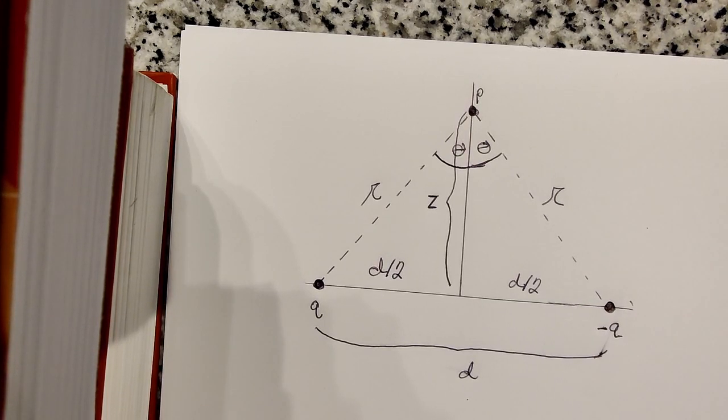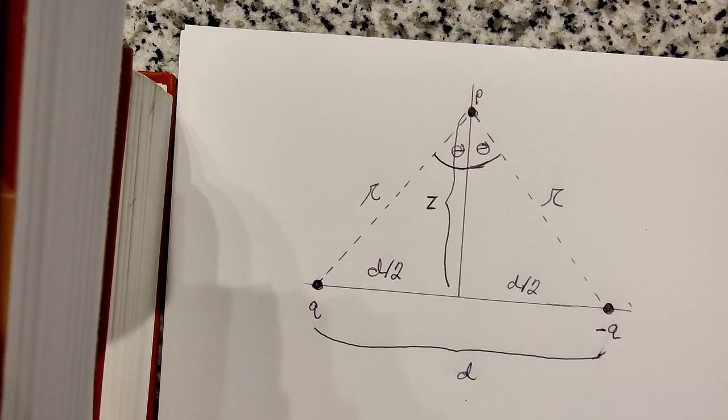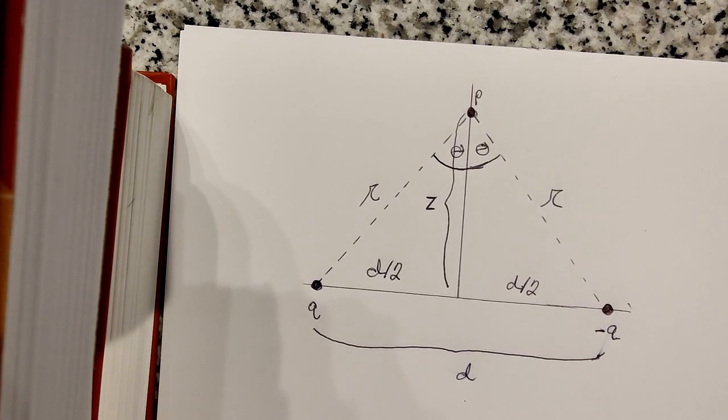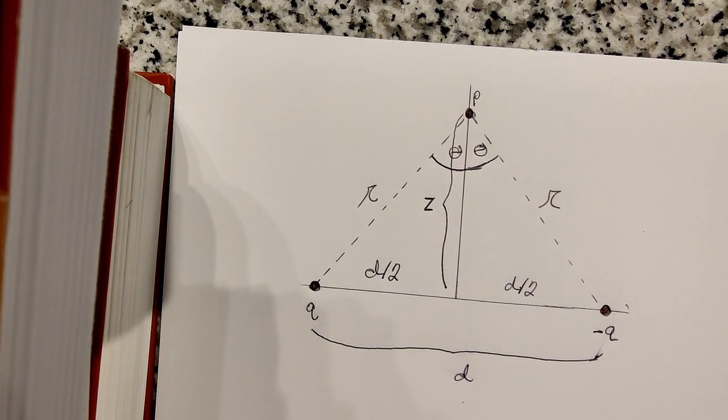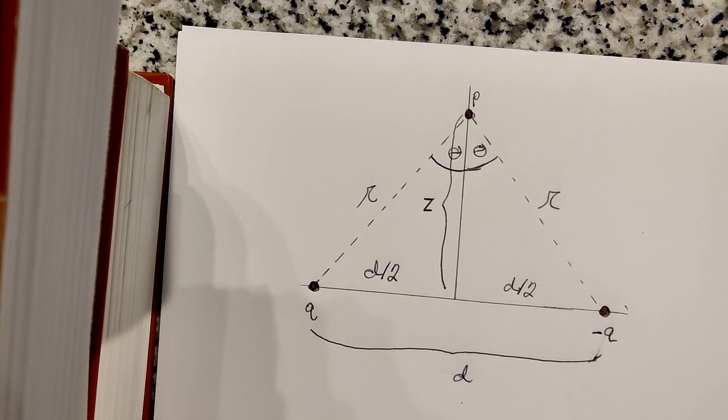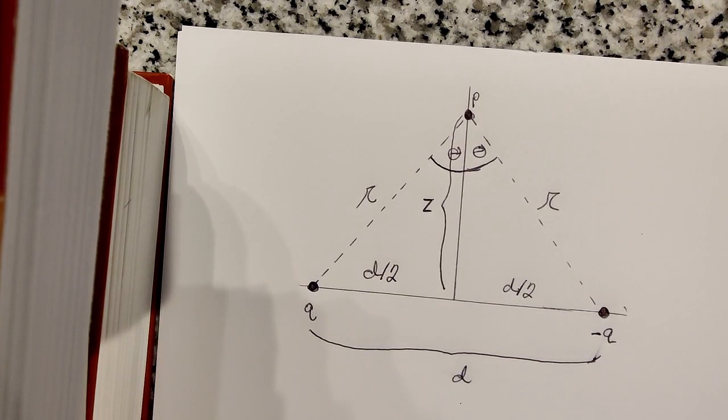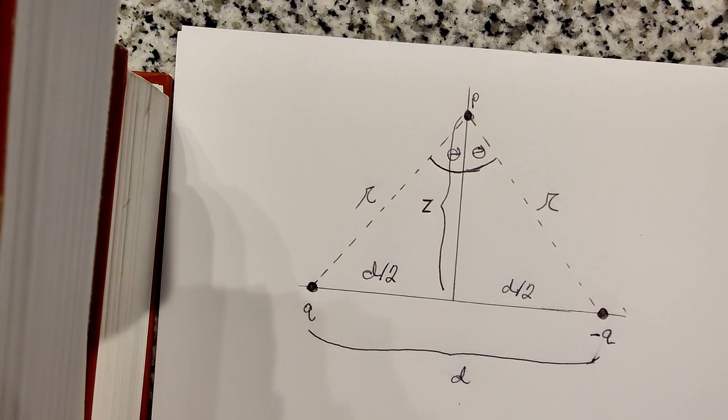So it says the final electric field, the magnitude and the direction, a distance z above the midpoint between equal and opposite charges plus and minus q that are a distance d apart.